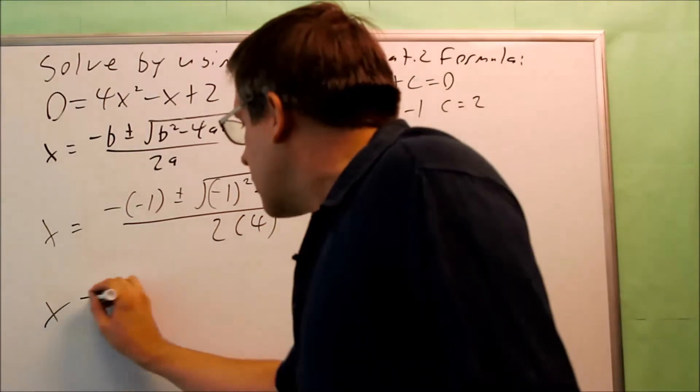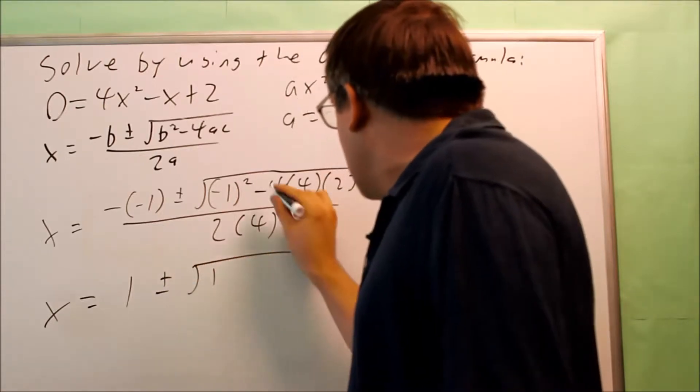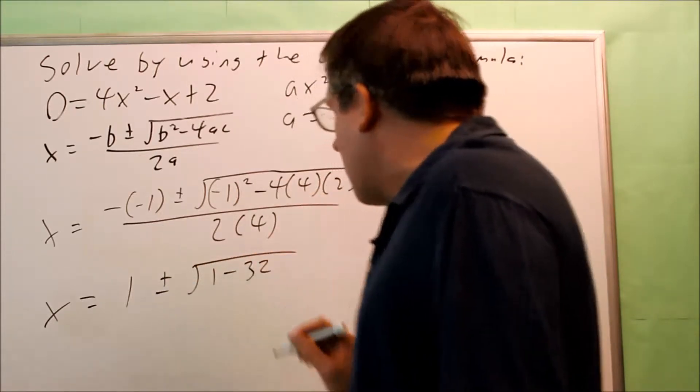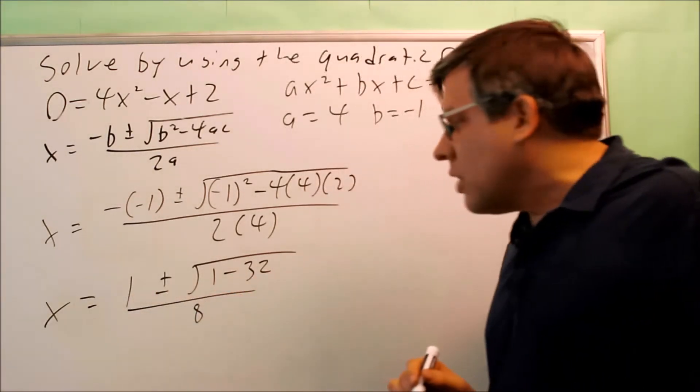Now I want to simplify this. I get 1 plus or minus the square root of 1. When I multiply this, I get negative 32. All this is over 8.